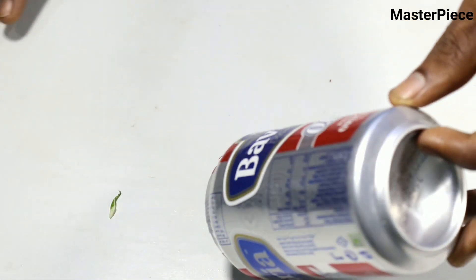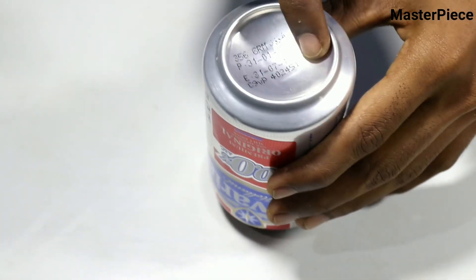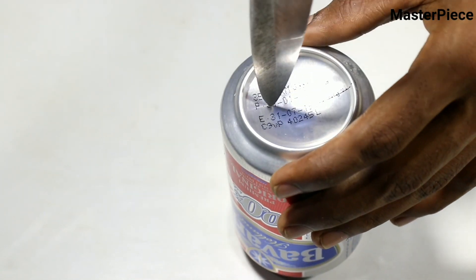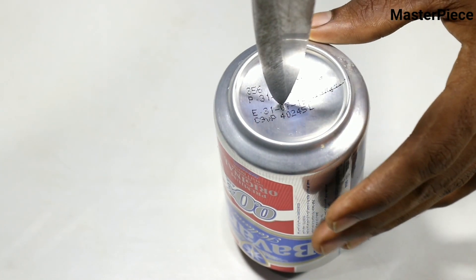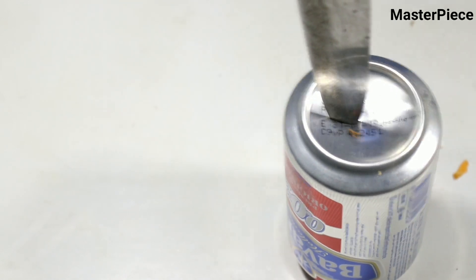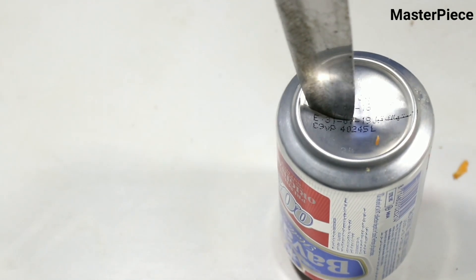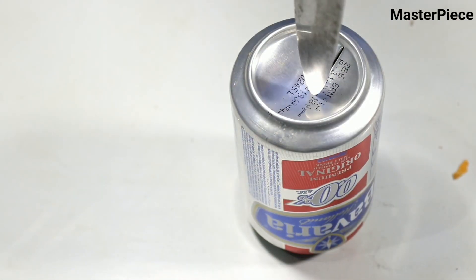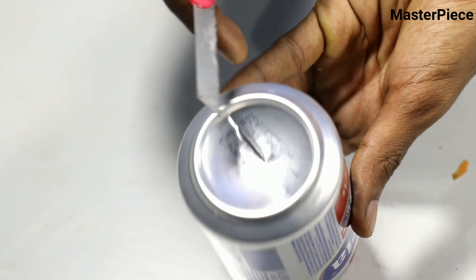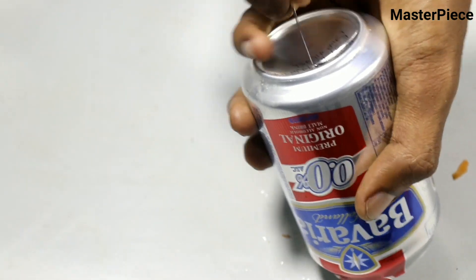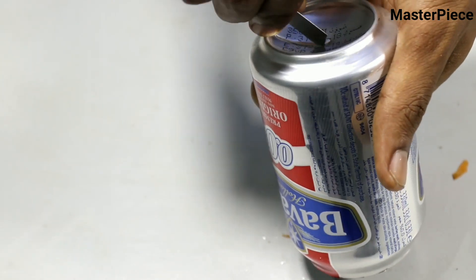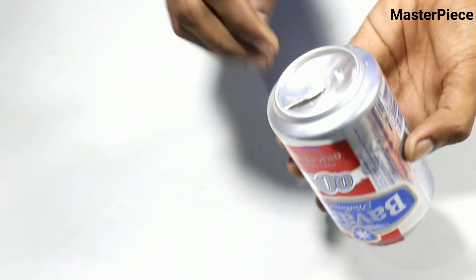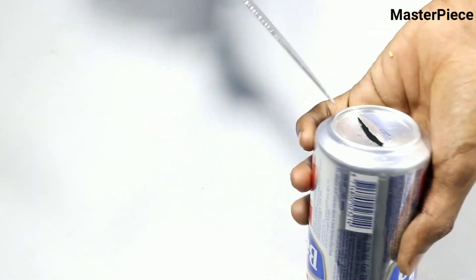So we have to cut a bag. We have to cut the bag and create a small L-shape. Now cut like this and add it to the edge of the plate.